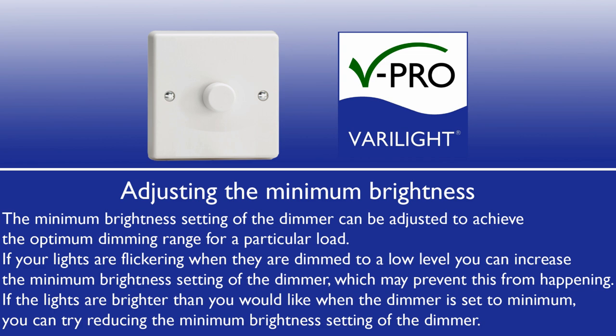How to adjust the minimum brightness. The minimum brightness setting of the dimmer can be adjusted to achieve the optimum dimming range for a particular load. If your lights are flickering when dimmed to a low level, you can increase the minimum brightness setting, which may prevent this. If the lights are brighter than you would like at minimum, you can try reducing the minimum brightness setting.